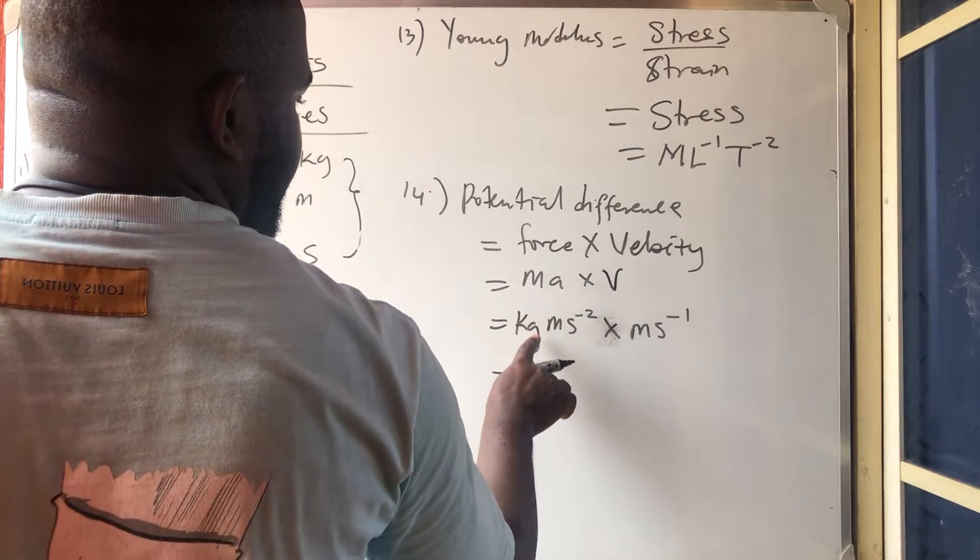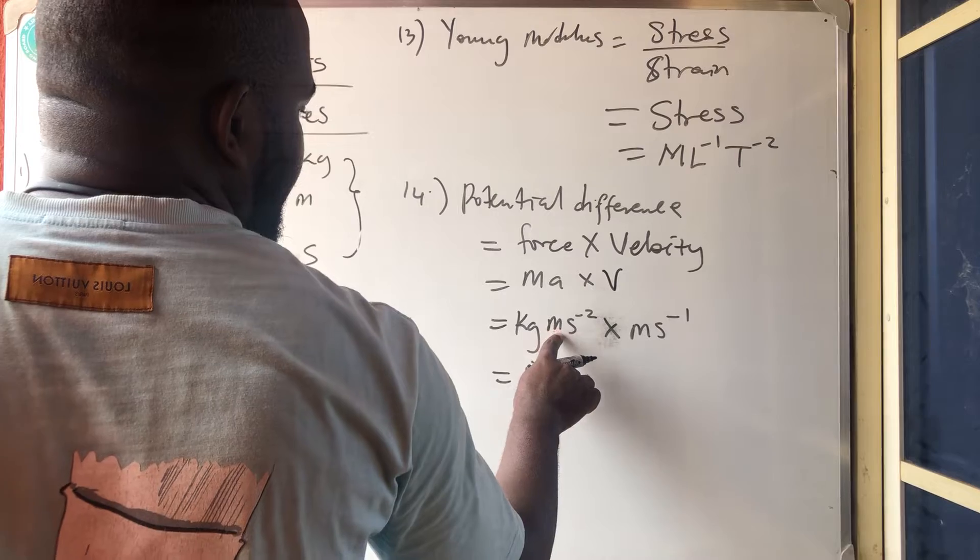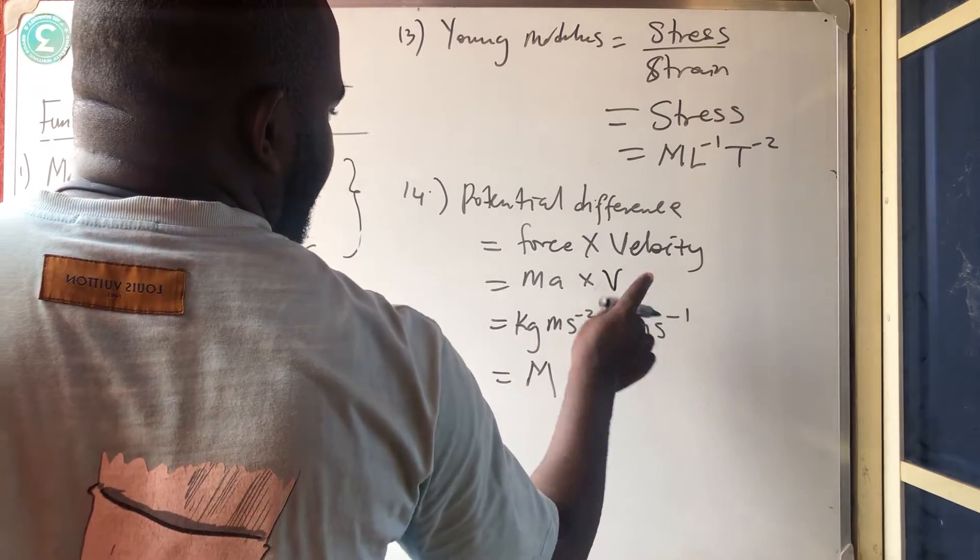And ma, mass, is kilogram. Acceleration is meter per second squared, while velocity is what? Meter per second.